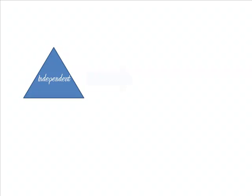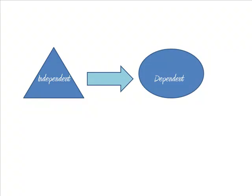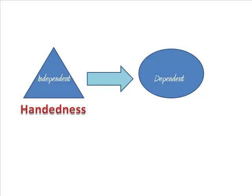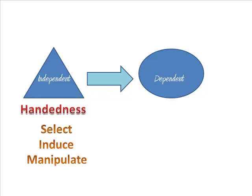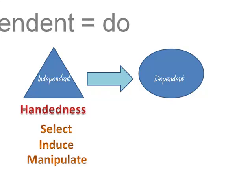For an experiment, you must have something for the subjects to do. There's an independent variable you're going to manipulate and a dependent variable you're going to measure. In our study, our preparations are minimal. Our independent variable is handedness. We don't have to manipulate this variable — genetics did that for us. We simply selected it. The independent variable is anything an experimenter selects, manipulates, or induces. It is independent of the subject's wishes or behaviors.